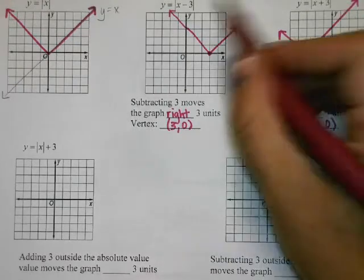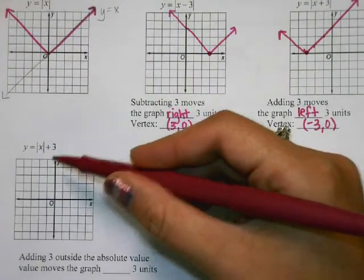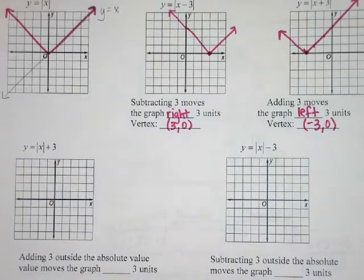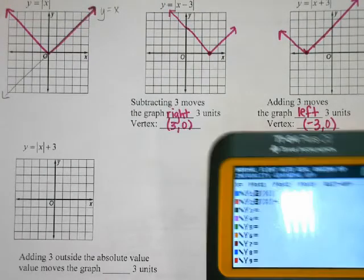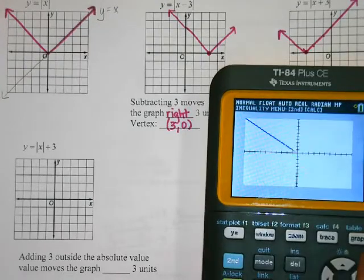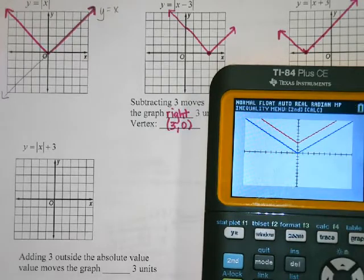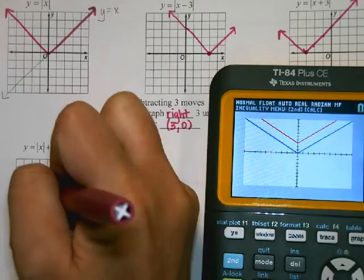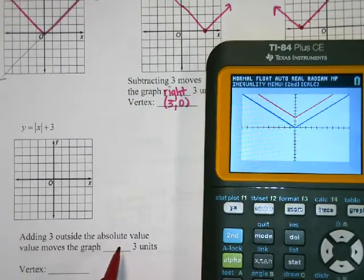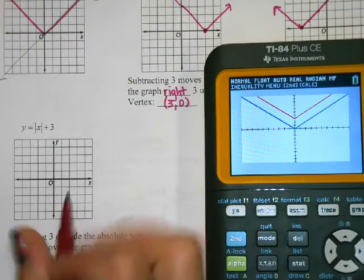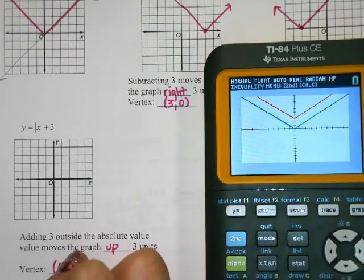That was inside the absolute value. What about if it's outside the absolute value? It's going to go up. And it did indeed move it up — so when I add 3 outside the absolute value, it moves the graph up 3 units. My vertex is now at 0, 3.